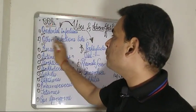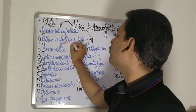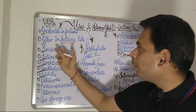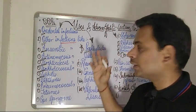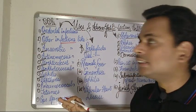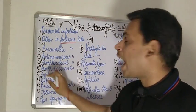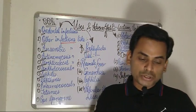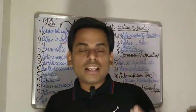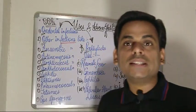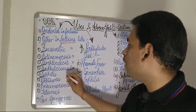The second 'O' of OOPS refers to other infections, including anaerobic infections, actinomycosis, streptococcal infections, staphylococcal infections, and syphilis. Do remember that one very famous beta-lactam antibiotic, penicillin G, is the drug of choice in the treatment of syphilis.